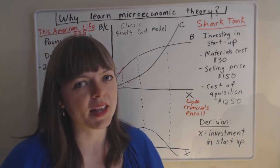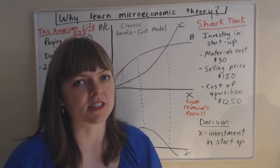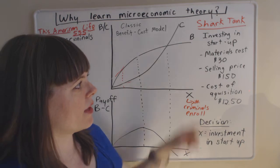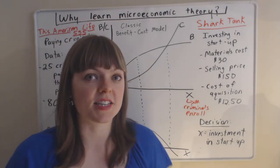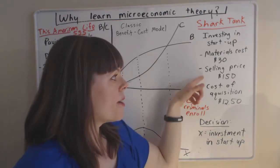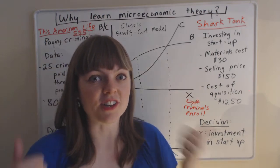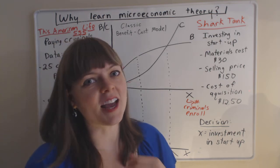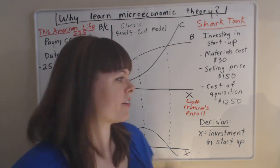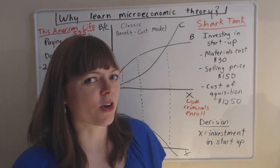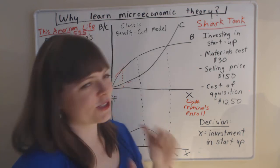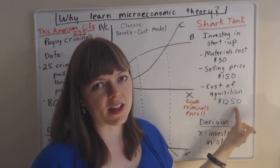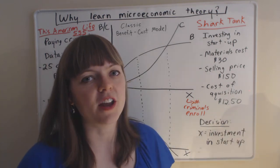And they want money from investors to get their business going and growing. And so the typical data they might give you might be, it costs us $30 in materials to produce the product, but we sell it for $150. Isn't that great? And then the sharks kind of poke them a little bit and they'll eventually ask, what's your cost of acquiring a new customer?